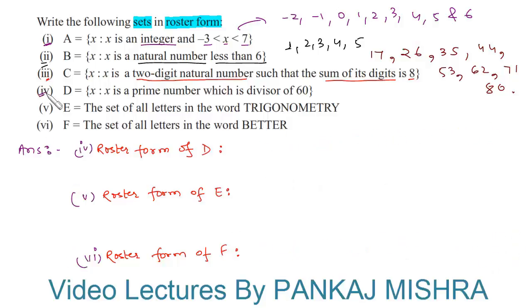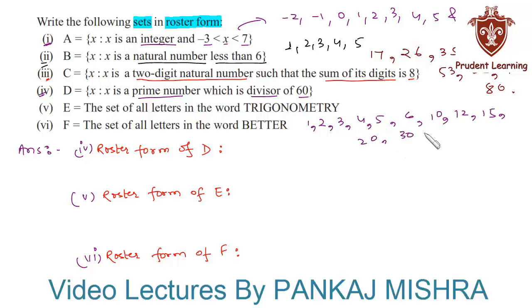The fourth section: Set D is equal to x such that x is a prime number which is a divisor of 60. Let's first find divisors of 60. The divisors of 60 are 1, 2, 3, 4, 5, 6, 10, 12, 15, 20, 30, and 60. These are the numbers that go evenly into 60.